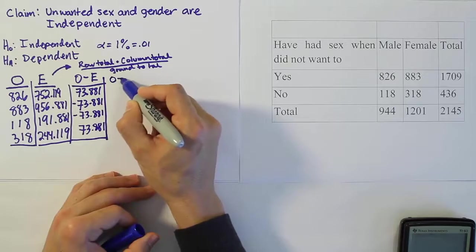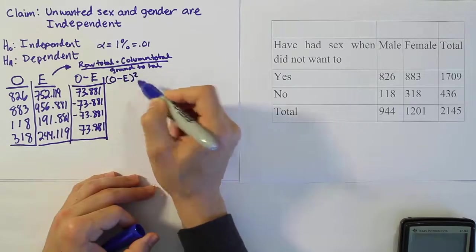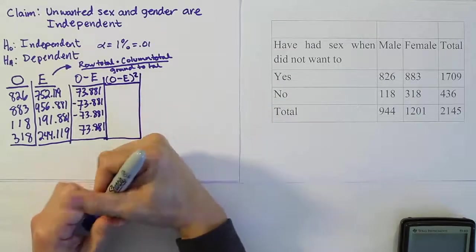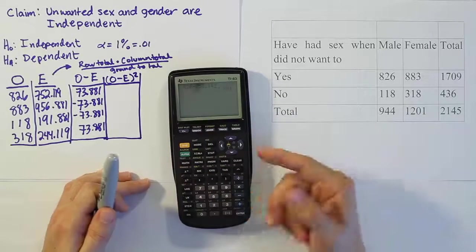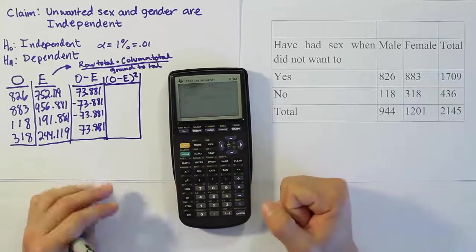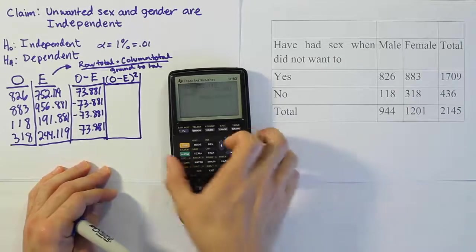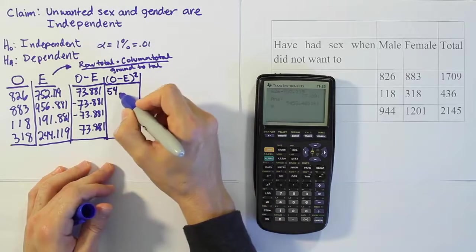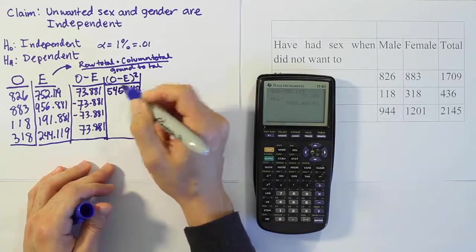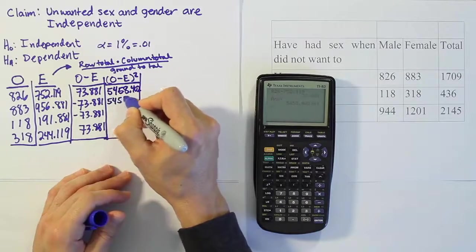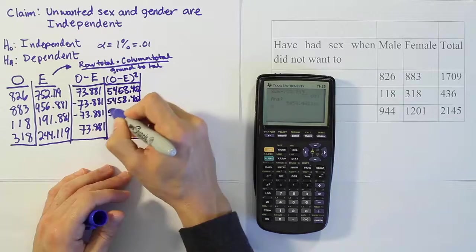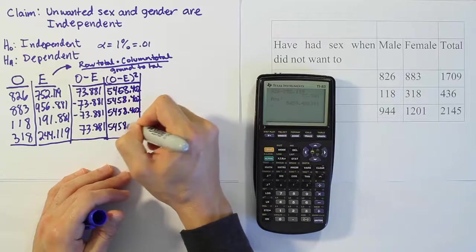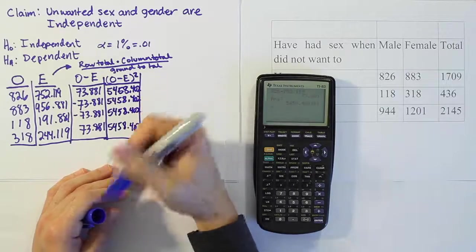Then for the next column we have to do observed minus expected quantity squared. Well since all the observed minus expected are basically the same value, we just have to square that value. And of course negative squared will end up being positive anyways. So we just have to square it and put that number in. It's 5458.402. We're going to do that all the way down.